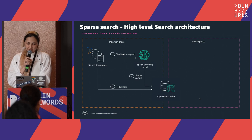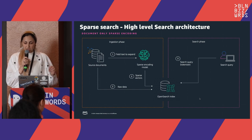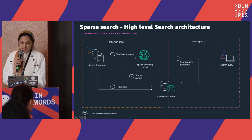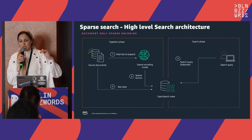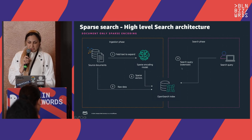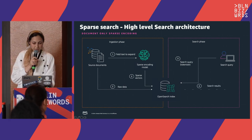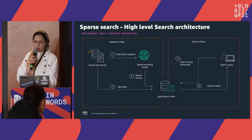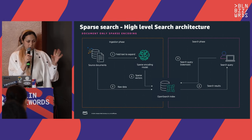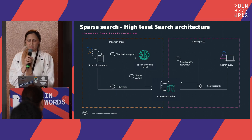For the document-only sparse encoding, the ingestion phase does not change — you still expand your fields offline and store the sparse vector in OpenSearch index. At search time, you can use the neural sparse tokenizer model, and you can also provide a file with the tokens' inverse document frequency (IDF) to use for your search. Otherwise, all tokens default to one. This approach brings better latency at search time. Document-only encoding is good; however, document-and-query encoding expects more latency at search time than document-only.